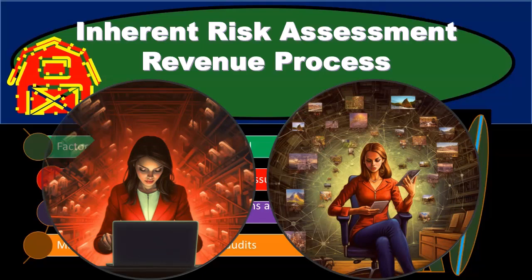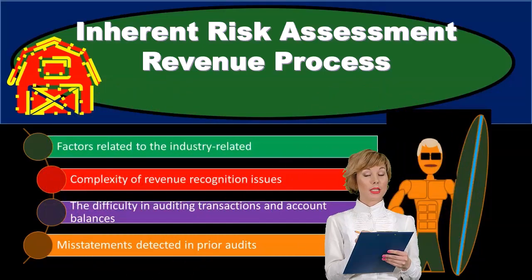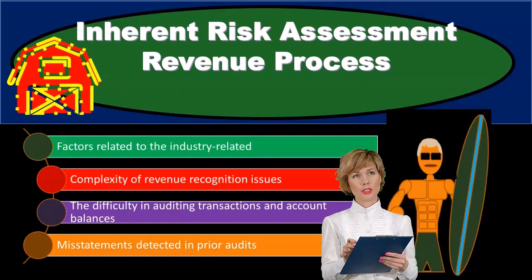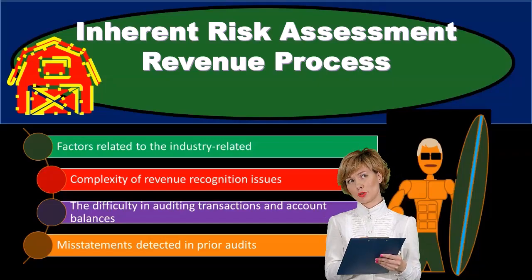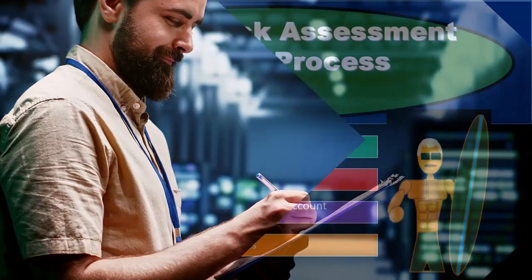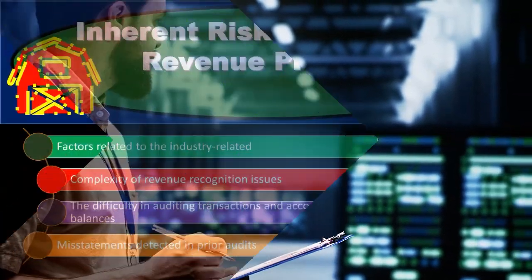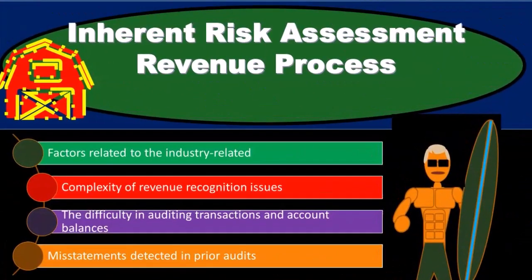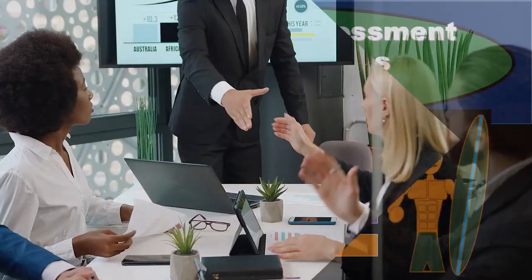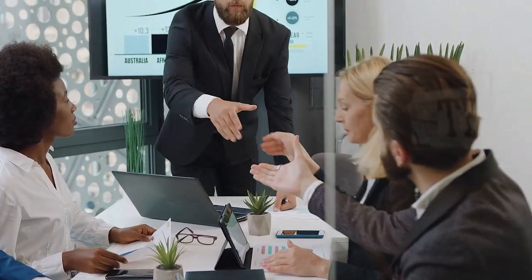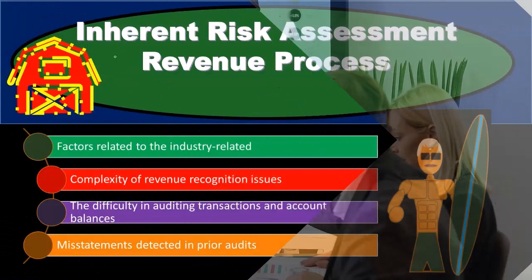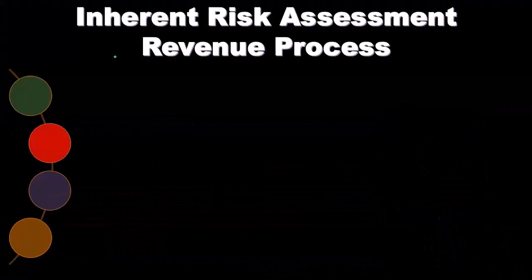The inherent risk is something that the auditor doesn't have direct control over. The business has some control over it by putting in types of internal controls and by choosing what type of business they are in. Different types of industries will have different types of inherent risk, so the business has chosen the inherent risk to some degree by choosing the type of industry they are involved in, and they can then mitigate that inherent risk through internal controls.